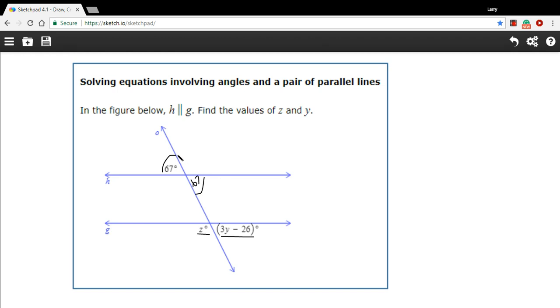And then let's use what we know about linear pairs. Here is a linear pair, the 67 and this part right here. Linear pairs always add up to 180, so all I have to do is subtract 67 from 180, and that would give me 113. And then I've got another vertical angle down here, and this is 113 as well.